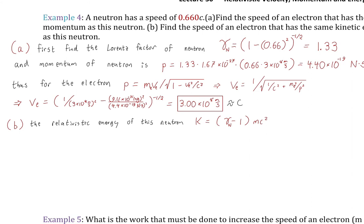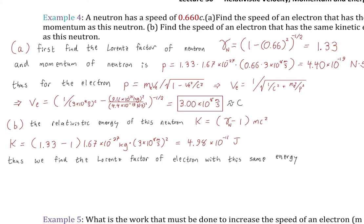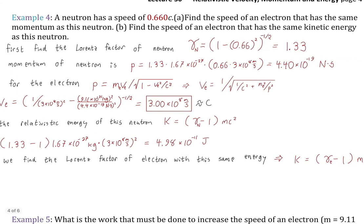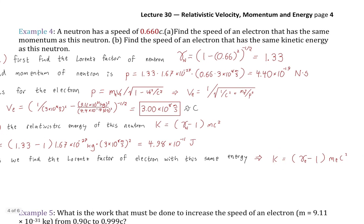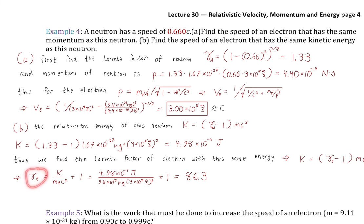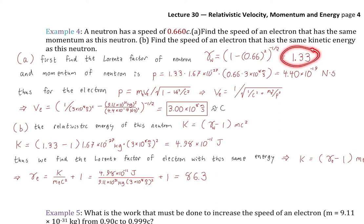For part B, we find an electron with the same kinetic energy as the neutron. We calculate the neutron's relativistic kinetic energy using gamma minus 1 times mc squared with gamma equals 1.33, getting the actual kinetic energy value. Setting that equal to the electron's relativistic kinetic energy and solving for gamma of the electron gives 86.3 — a big change. When we go from the much more massive neutron to the much less massive electron keeping energy fixed, the Lorentz factor jumps from 1.33 to 86.3.